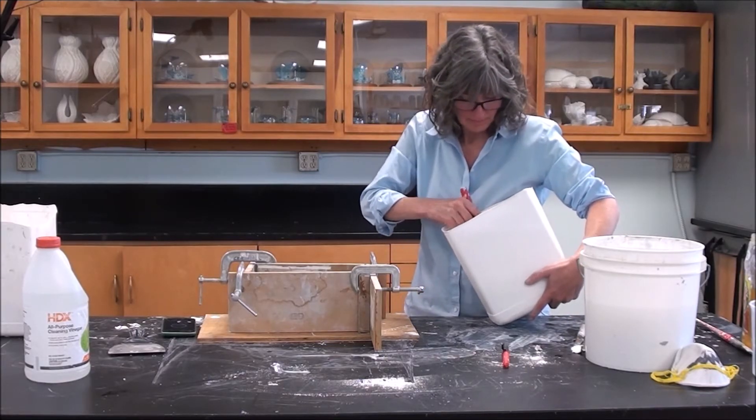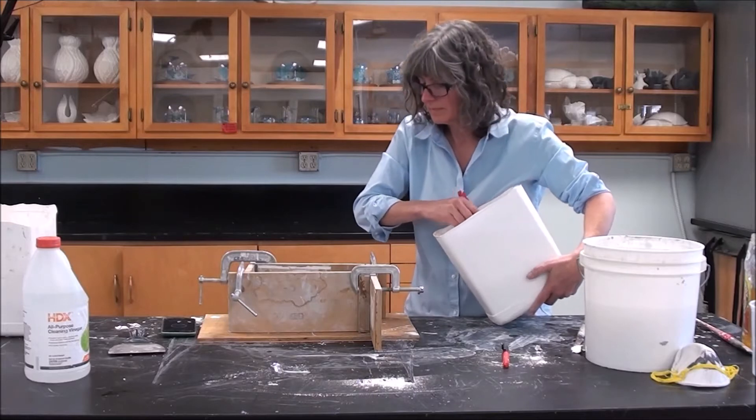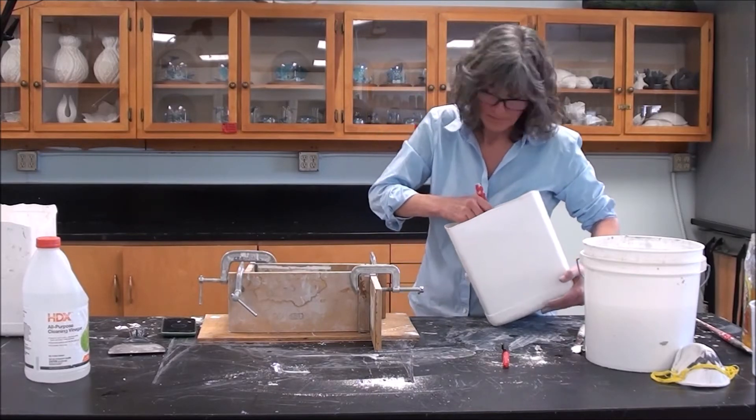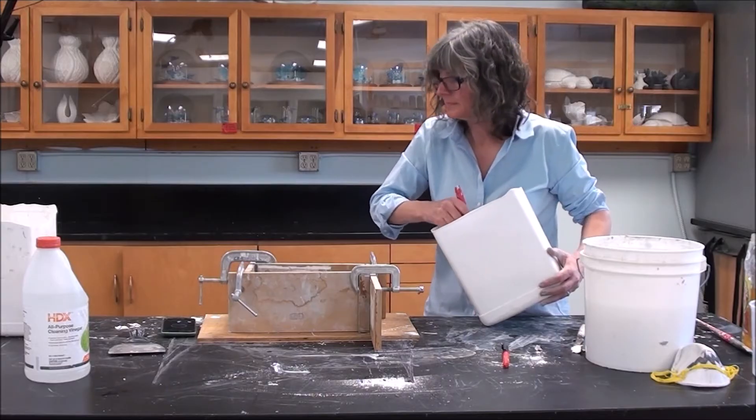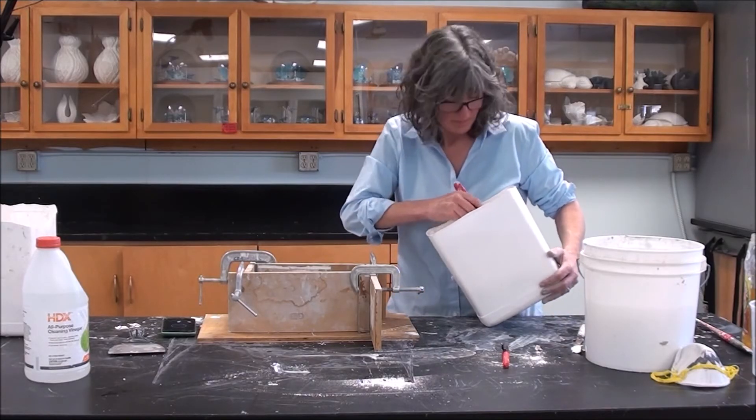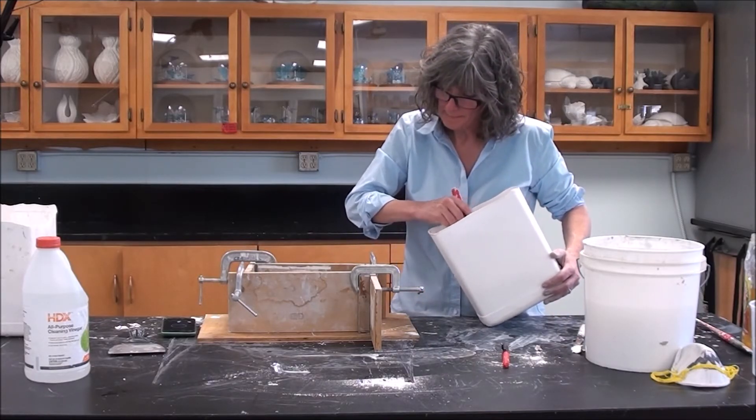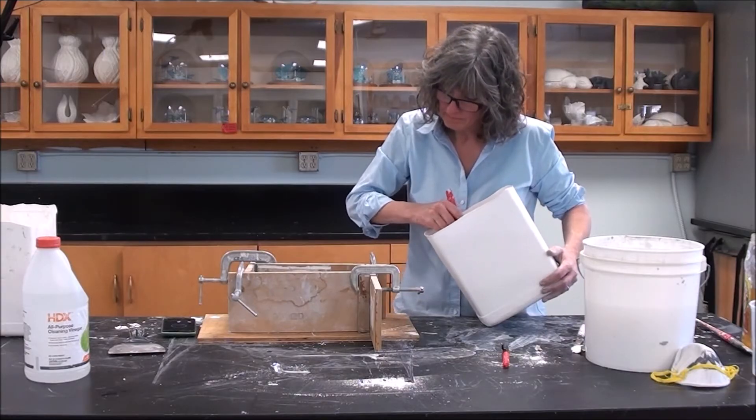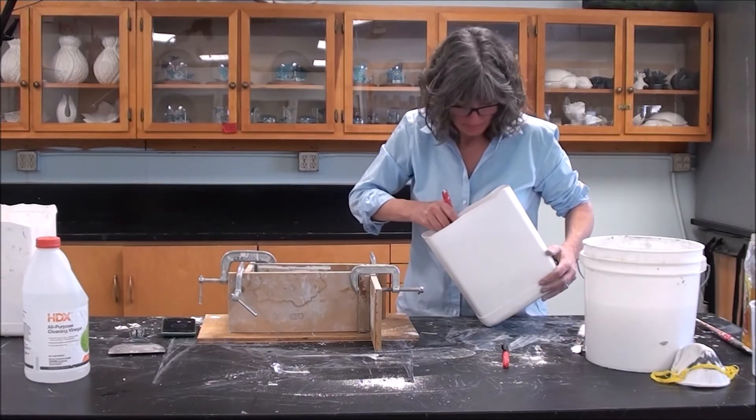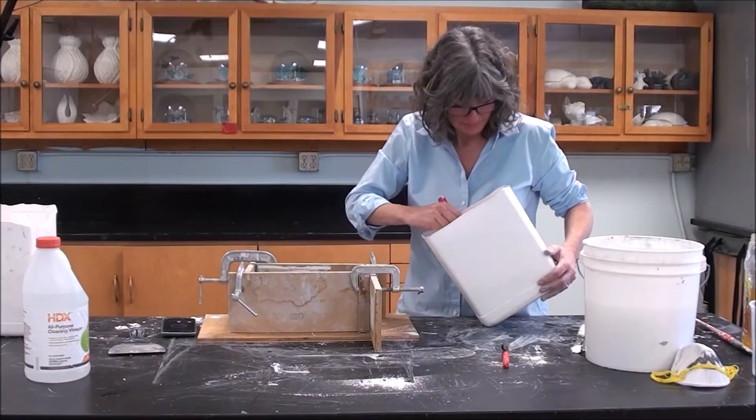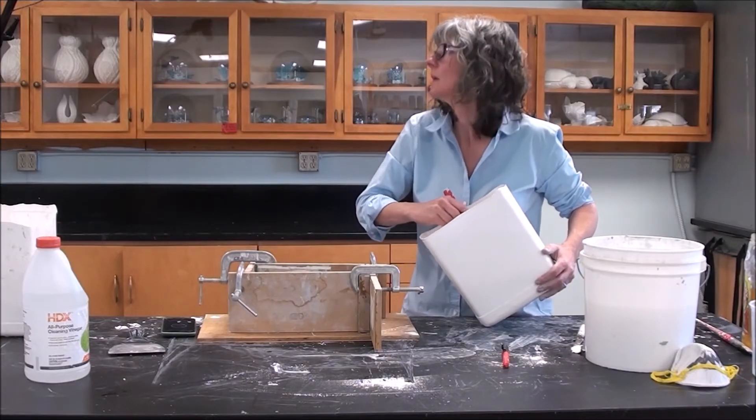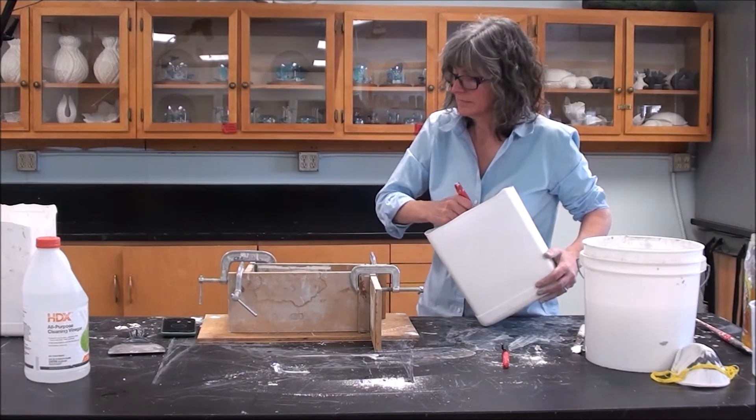Another way to speed up the process of your plaster set time is to mix your plaster quickly. Some people use a drill or a handheld blending device to speed up their blending process, which additionally speeds up the set time of the plaster. I personally don't do this method because I'm not interested in speeding up my process.